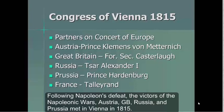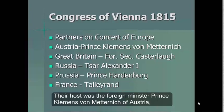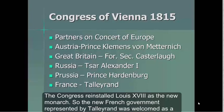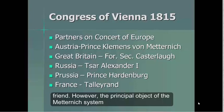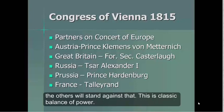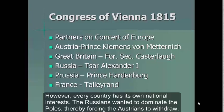Following Napoleon's defeat, the victors of the Napoleonic Wars met in Vienna in 1815. Their host was the Foreign Minister Prince Clemens von Metternich of Austria, a Catholic German. The Congress reinstalled Louis XVIII as the new monarch, so the new French government represented by Talleyrand was welcomed as a friend. However, the principal objective of the Metternich system was to form an alliance between all the parties. If one country seeks to dominate the rest, the others will stand against it. This is classic balance of power.